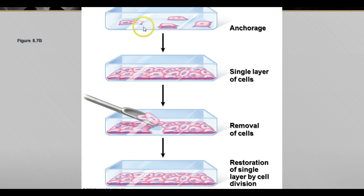Here's what happens in the lab: you put some cells in the culture dish. They'll anchor to the growth medium, and under the stimulation of some growth factors, the cells will start growing and dividing until they make a single layer of cells, and then they'll stop dividing. If you remove some of the cells again, they will restore that single layer by cell division until they reach that point and stop again. By studying this, scientists have learned about some of the controls of the cell cycle.